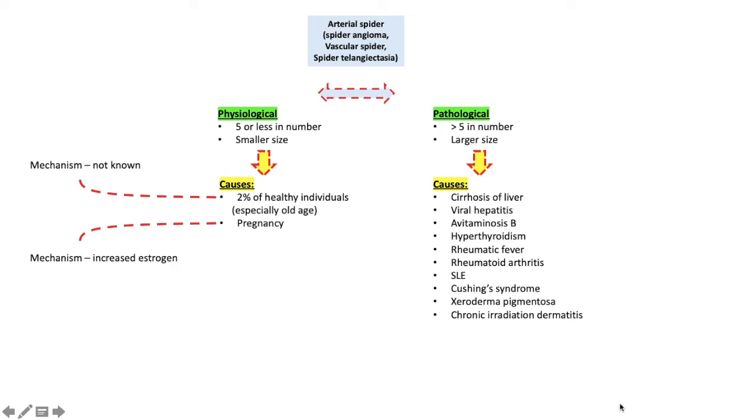Why it occurs in cirrhosis of liver? The mechanism is decreased estrogen metabolism leading to increased estrogen levels in the blood, similar to that which occurs in pregnancy. Size and number of spider angioma increases with disease progression. So when the number of spider angioma are more, that means the cirrhosis is very well advanced.